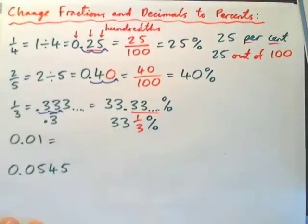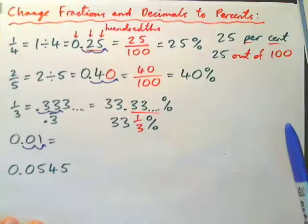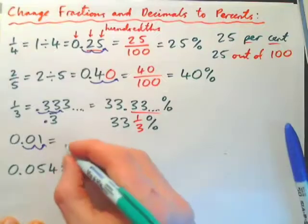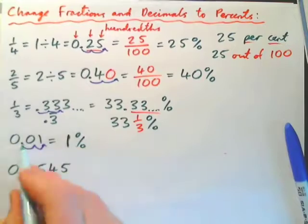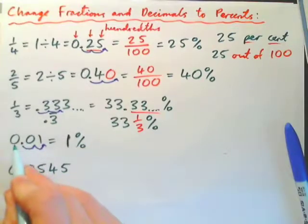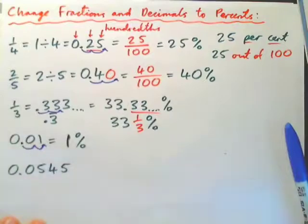Zero point zero one. Turn that into a percentage. Just have to move the decimal point one, two spaces to the right. And now you have one point zero or one percent. So one cent is one percent of a dollar.